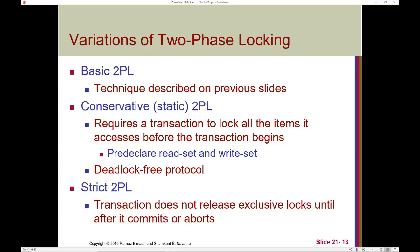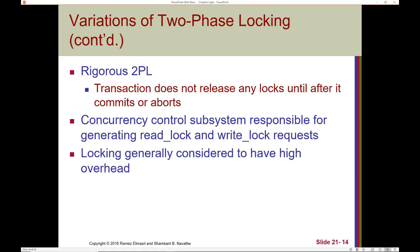There are different variations of two-phase locking. Basic two-phase locking was discussed previously. Conservative or static two-phase locking requires a transaction to lock all items it accesses before the transaction begins — read and write sets must be pre-declared, and this is a deadlock-free protocol. In strict two-phase locking, a transaction does not release exclusive locks until after it commits or aborts. In rigorous two-phase locking, a transaction does not release any locks until after it commits or aborts.